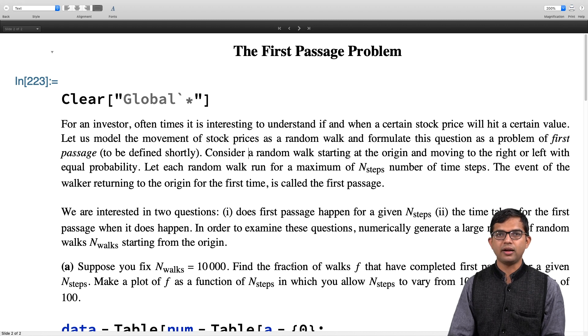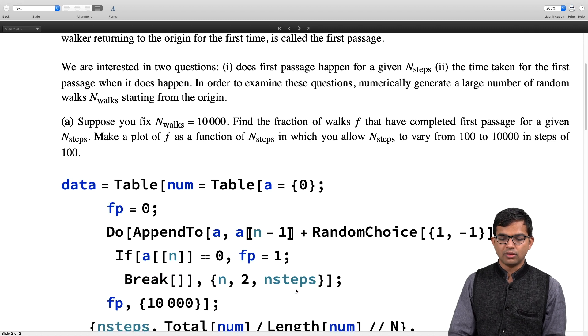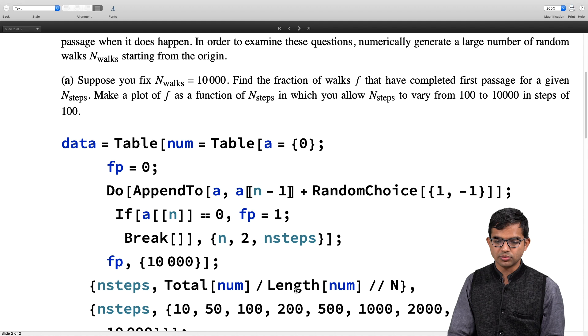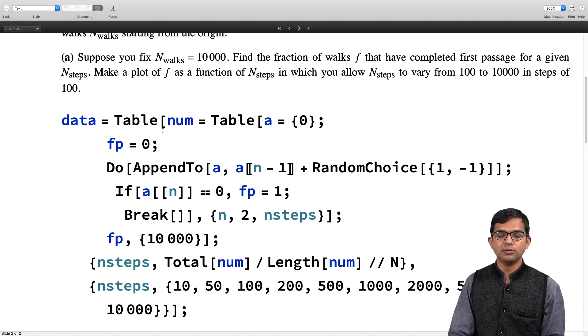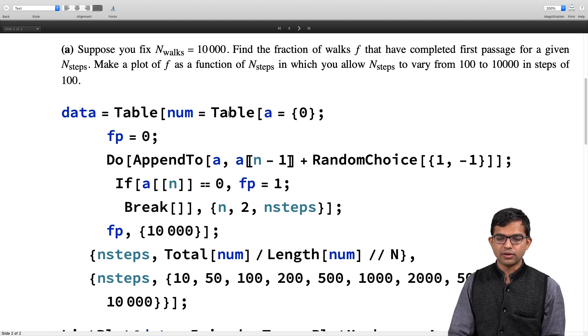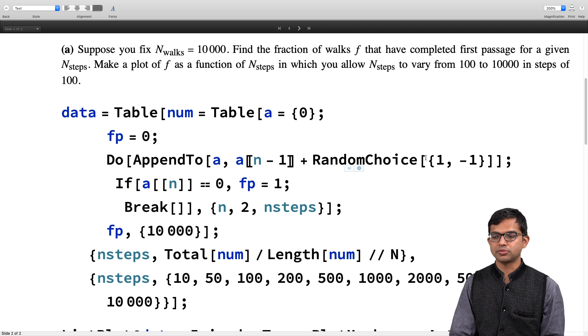Here is my solution. I prefer that you really work hard before you look at my solution. You must make sure that you have given your best attempt. What I do is I generate a table and inside this I have another table. This table will generate for me a random walk. I start with an array with just 0 in it, and then I am introducing this quantity which I am calling fp, fp equal to 0.